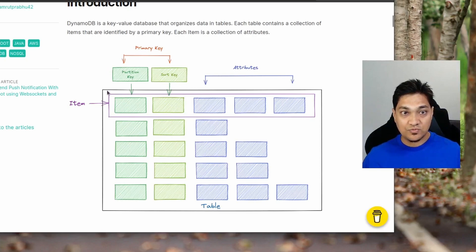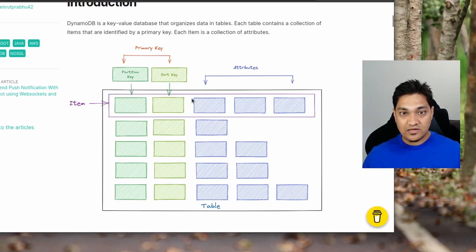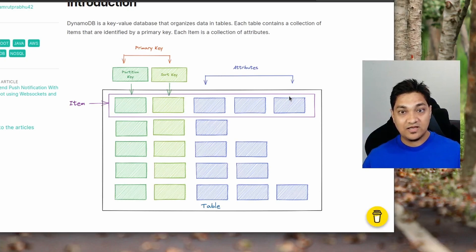Similarly, we have a sort key to identify the particular item within that partition. A combination of these two keys forms a composite primary key. You can also have simple primary keys where you only have a partition key. The remaining are attributes, which can be either simple attributes like strings, numbers, or binary, or nested attributes that have yet another level of attributes within themselves.